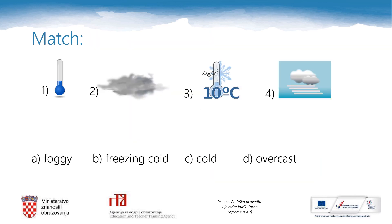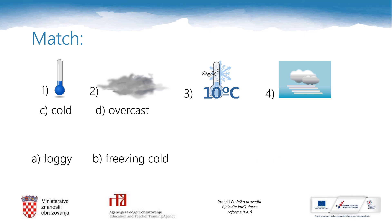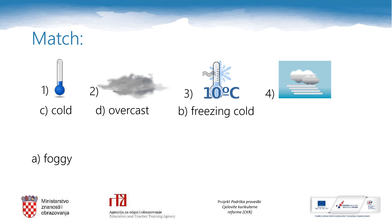It's your turn to revise the vocabulary. You should match the words to the pictures. Picture number one means cold. Number two is overcast. Number three is freezing cold. And number four is foggy.